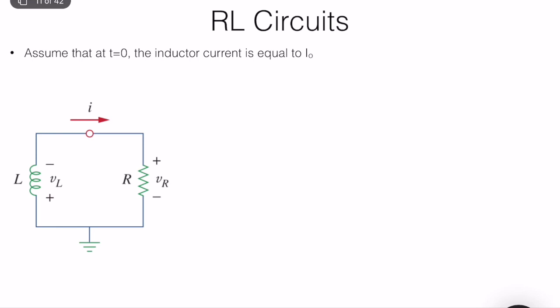In the previous video lecture we analyzed RC circuits and made some introduction to first-order circuits in electrical systems. Now we will analyze RL circuits. The main difference is that instead of a capacitor we have an inductor — everything is technically the same.